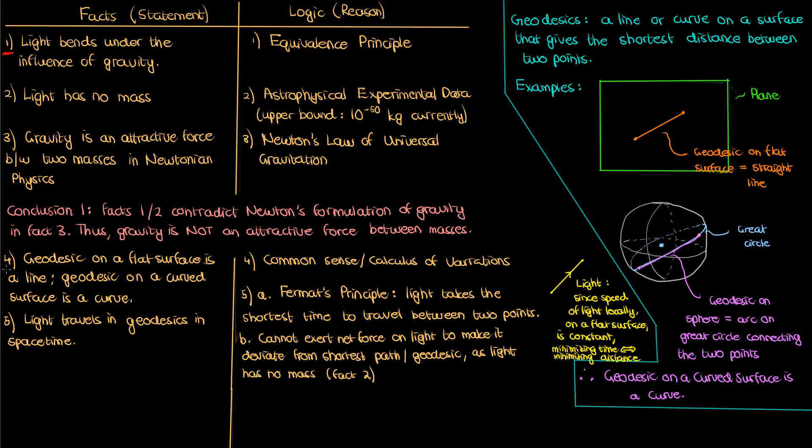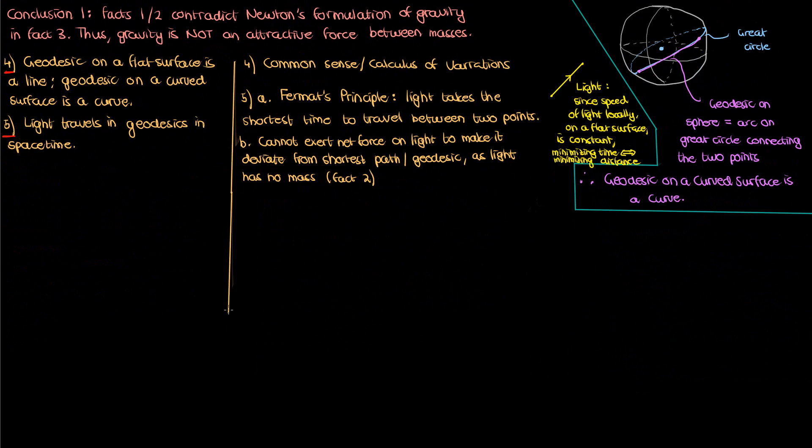So now I have three important facts. The first is fact number one, light bends or curves under the influence of gravity. The second is fact number four, that curved surfaces have curved geodesics. And the third is fact number five, that light only travels in geodesics in space-time. I'm going to use and connect these facts to describe the true nature of gravity because Newton's description is not enough as we showed.